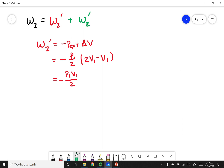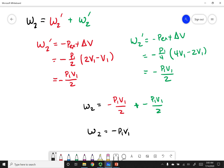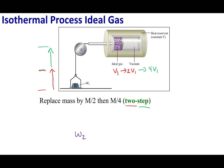For the second step I still use the same formula. The final pressure, since I expanded to four times the amount, is P1 over 4. My final volume is four times the original, but the second step starts at two times that original volume. Calculating this out gives negative P1·V1 over 2. Adding the two steps together gives negative P1·V1. So work for a two-step process equals negative P1·V1.